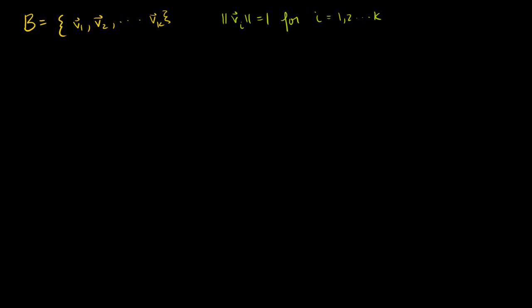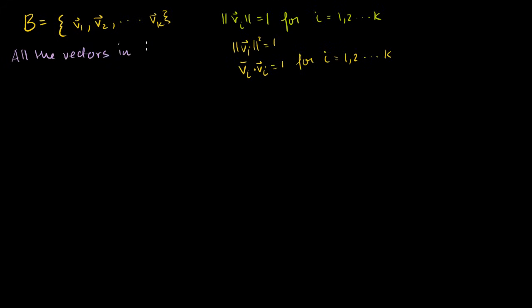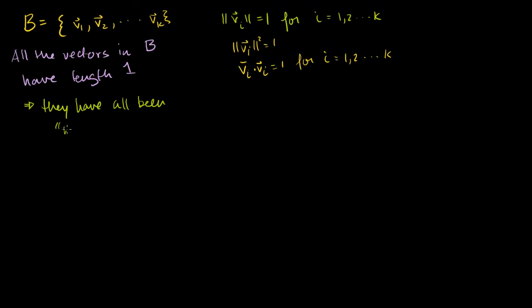The first interesting thing about these vectors is that they all have length equal to 1. The square of vi's length is equal to 1, or vi dot vi is equal to 1, for i equal to 1, 2, all the way to k. All the vectors in B have length 1, or another way to say it is that they've all been normalized — they are all unit vectors.